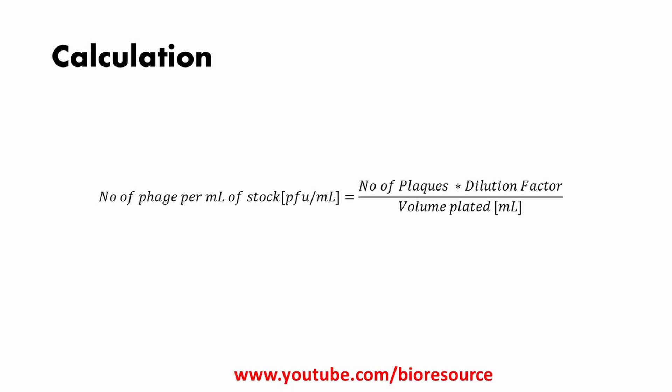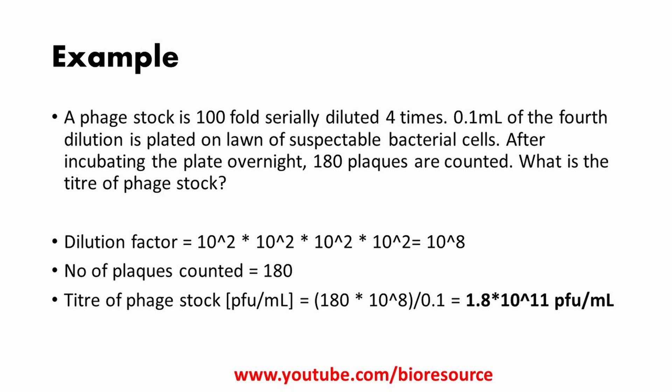Let's see an example and how to calculate PFU per ml. The number of phage per ml of stock is equal to the number of plaques multiplied by the dilution factor, divided by the volume plated. For example, a phage stock is 100-fold serially diluted four times, and 0.1 ml of the fourth dilution is plated on a lawn of susceptible bacterial cells. After incubating the plate overnight, 180 plaques are counted. The dilution factor is 100-fold done four times, so it becomes 10 to the power of 8. Therefore, the titer of the phage stock will be 1.8 × 10¹¹ PFU per ml.